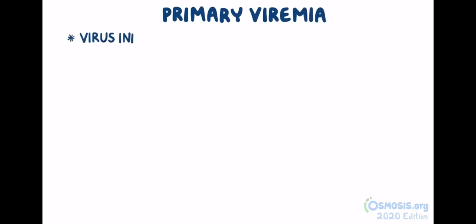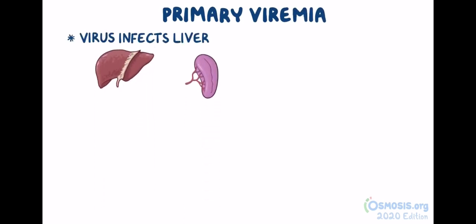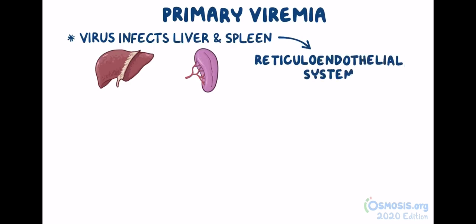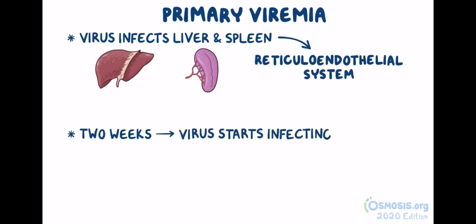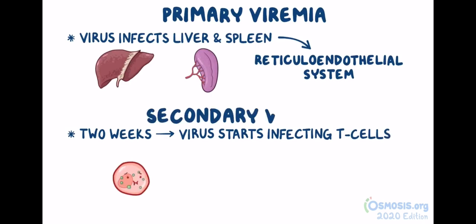In primary viremia, the virus infects a part of the immune system in the liver and spleen called the reticuloendothelial system, which is made up of phagocytic cells. About two weeks after entering the body, the virus starts infecting immune cells themselves, specifically T cells, and that is considered the secondary viremia.